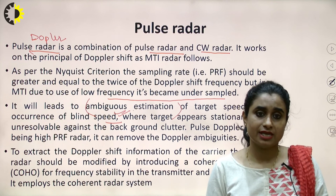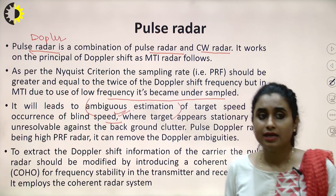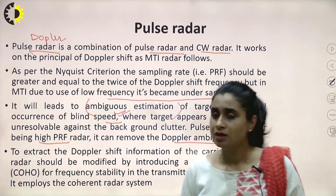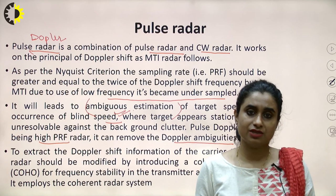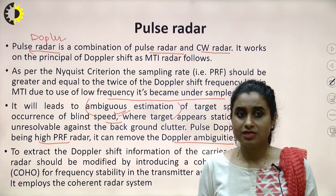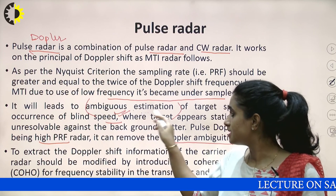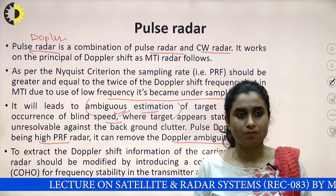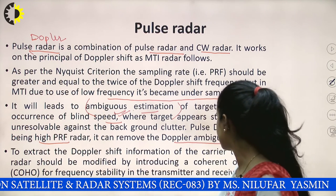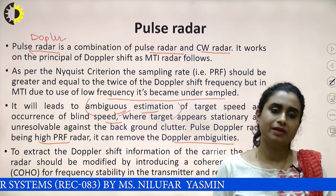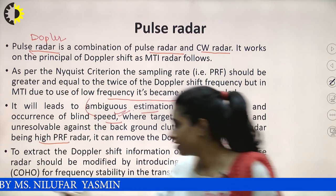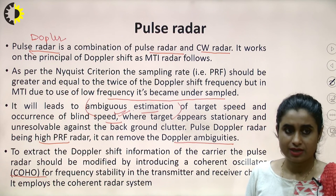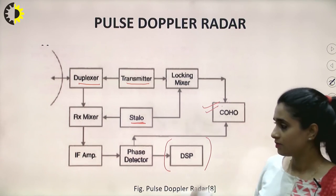Pulse Doppler radar uses high PRF, so it can remove the Doppler ambiguities. Whenever we use Doppler frequency shift as a background phenomena, there are always chances of ambiguous estimation and occurrence of blind speed, which can be reduced in pulse Doppler radar. To extract the Doppler shift information of the carrier, the pulse radar should be modified by introducing a coherent oscillator. We use a coherent oscillator for frequency stability in the transmitter and receiver chain, so it employs the coherent radar system.